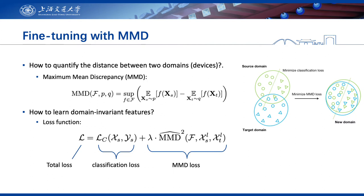The classification loss makes sure that the learned features are discriminative. In our experiments, we use cross-entropy loss by default. However, an attacker can also select other loss functions specific to deep learning-based side-channel analysis. The MMD loss can be regarded as a constraint term with a penalty parameter lambda. The lambda here behaves similarly to the penalty parameter in L1 and L2 regularizations.